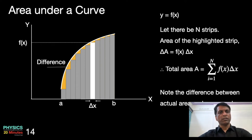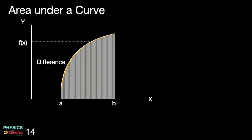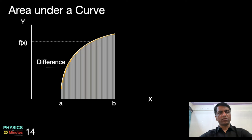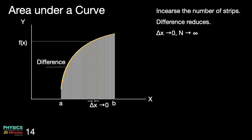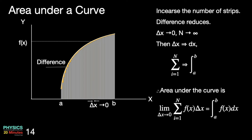One of the ways to solve this problem is to choose thinner strips and make the number of strips very large. If you make the strips thinner, the difference between the real area and the measured area will reduce drastically. Theoretically, if each strip is made infinitesimally thin, then the upper edge of the strips will follow the curve at every point and give the accurate area under the curve. So as Δx tends to 0, n tends to infinity. Since Δx tends to 0 and becomes infinitesimally thin, we write it as dx. In this case, summation can be replaced by integration. Therefore the area under the curve is the limit as Δx → 0 of the summation from i = 1 to n of f(x) Δx, which equals the integral from a to b of f(x) dx.